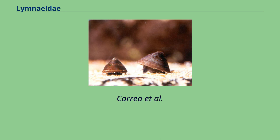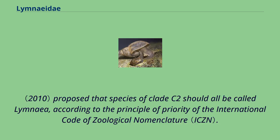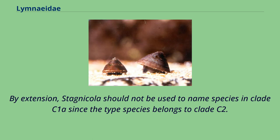Coria et al. proposed that species of clade C2 should all be called Limeidae, according to the principle of priority of the International Code of Zoological Nomenclature. By extension, Stagnicola should not be used to name species in clade C1a since the type species belongs to clade C2.